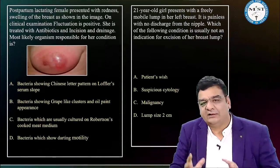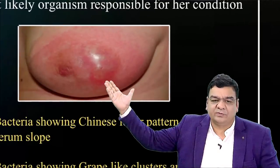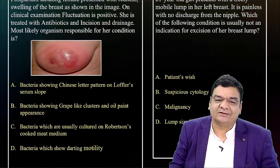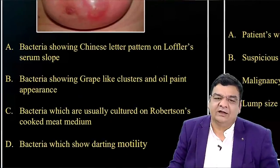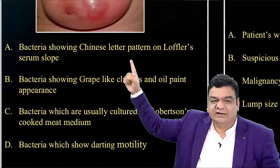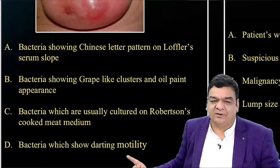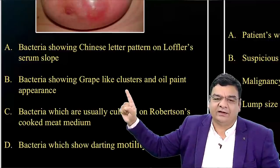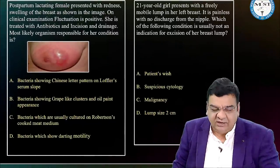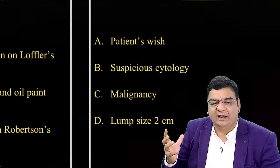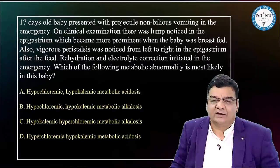There may be one question from breast abscess or fibroadenoma. For breast abscess, they may ask the causative organism — it is Staphylococcus aureus, with integration between microbiology and surgery. For fibroadenoma, they may ask what is or is not an indication for removal. Remember, there is a popcorn-like calcification in fibroadenoma.